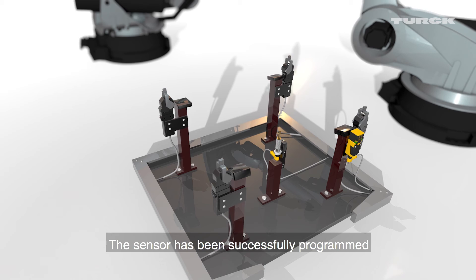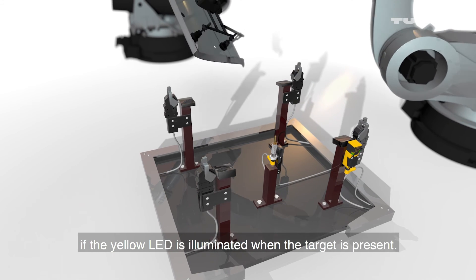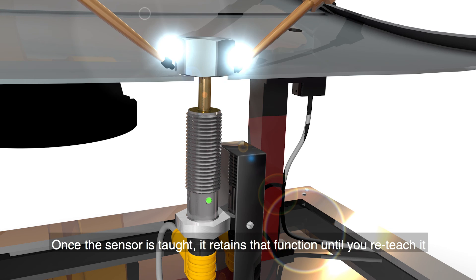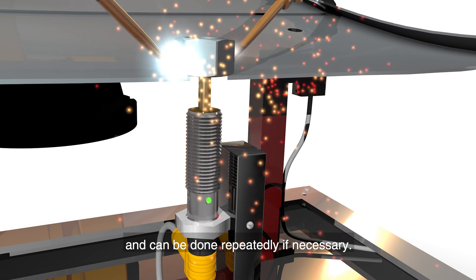The sensor has been successfully programmed if the yellow LED is illuminated when the target is present. Once the sensor is taught, it retains that function until you reteach it and can be done repeatedly if necessary.